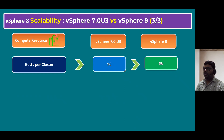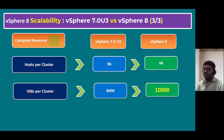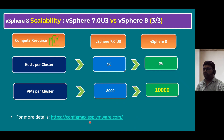Now let's understand the compute resource from a cluster perspective. Hosts per cluster: in vSphere 7.0 the maximum is 96, and in vSphere 8 the count remains the same — 96 maximum ESXi hosts within a single cluster. A cluster is a grouping of multiple ESXi hosts. Virtual machines per cluster: in vSphere 7.0 the maximum is 8,000 VMs, but in vSphere 8 that count increases from 8,000 to 10,000. I've covered compute resource specifically; for the latest configuration limits, verify from the VMware configuration maximum website.